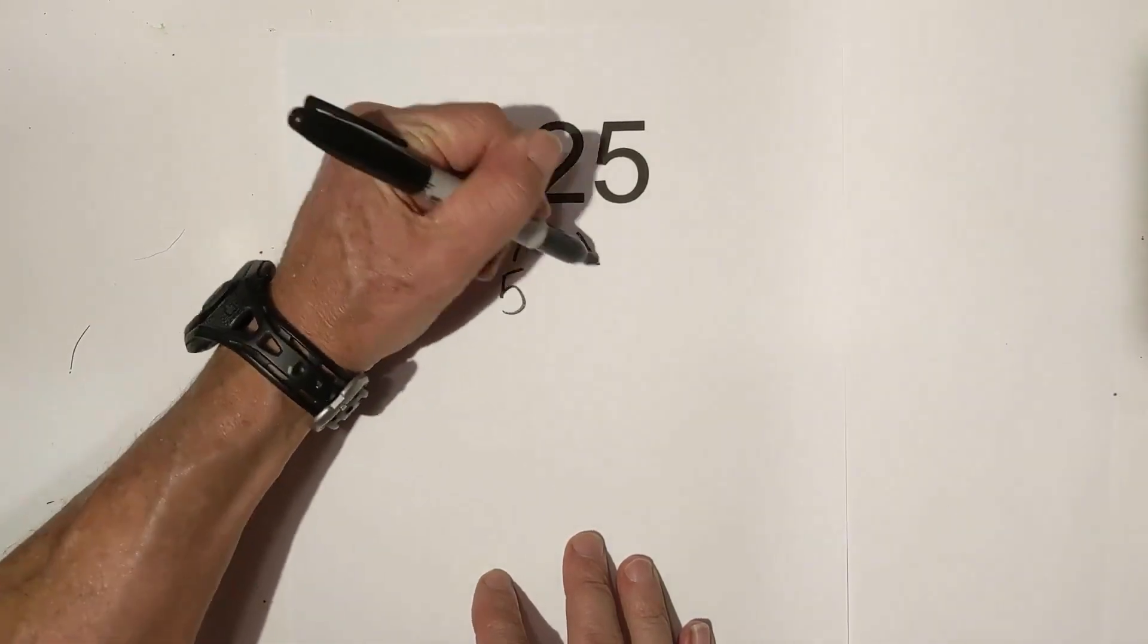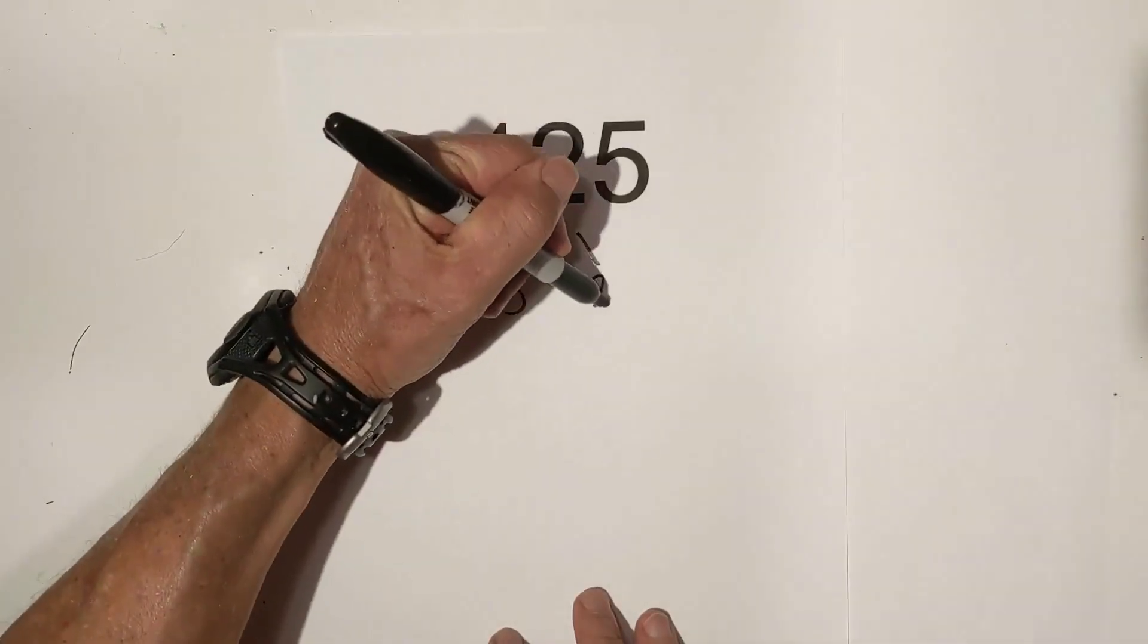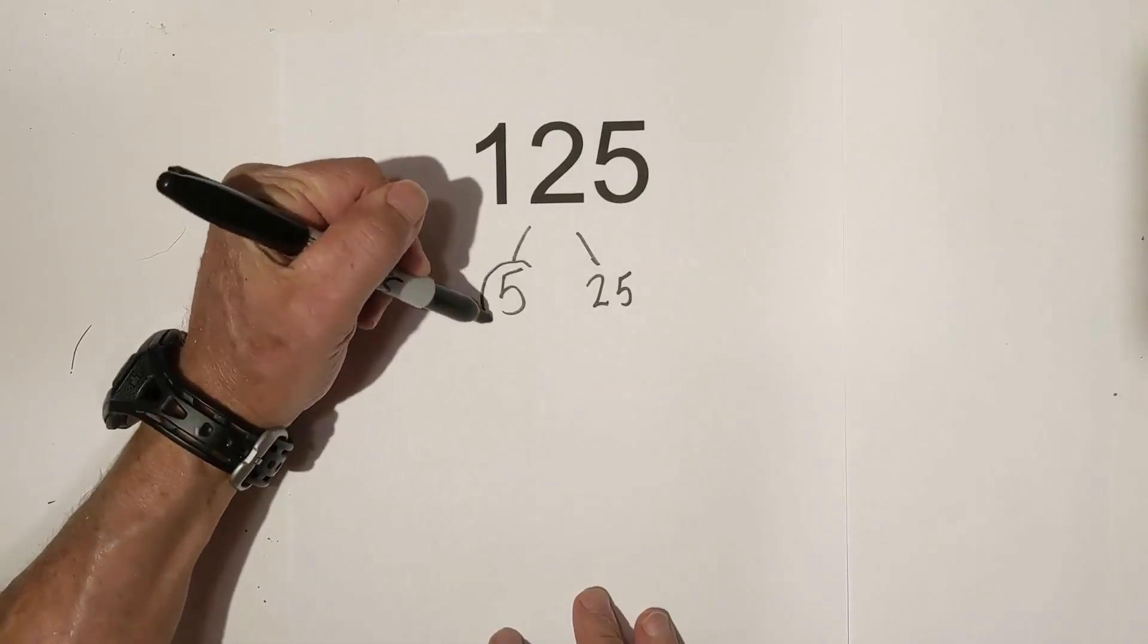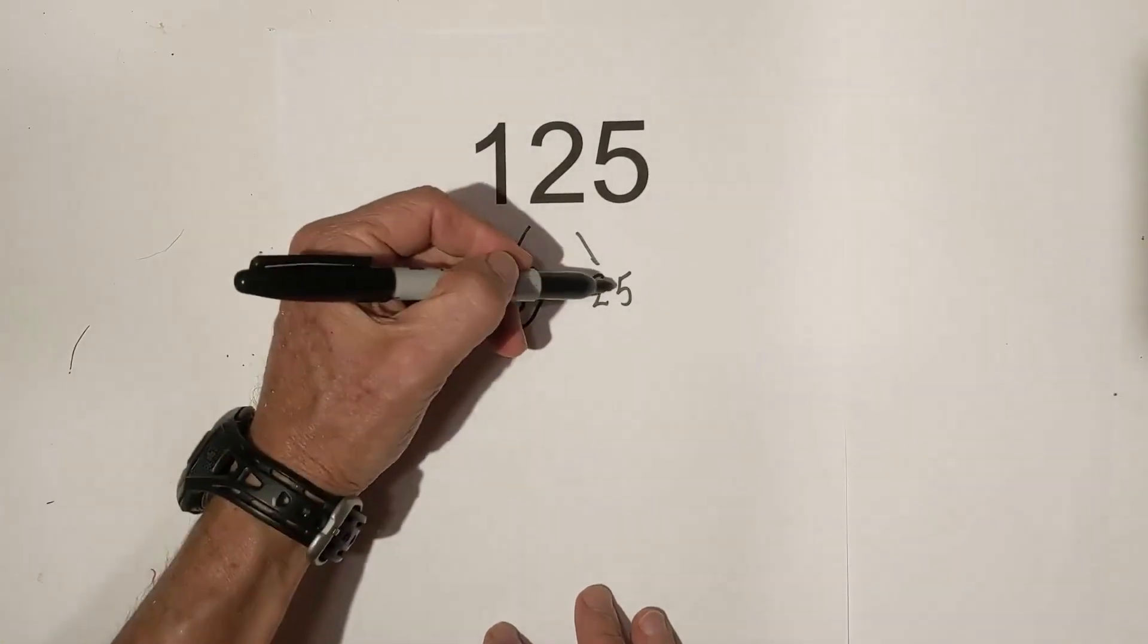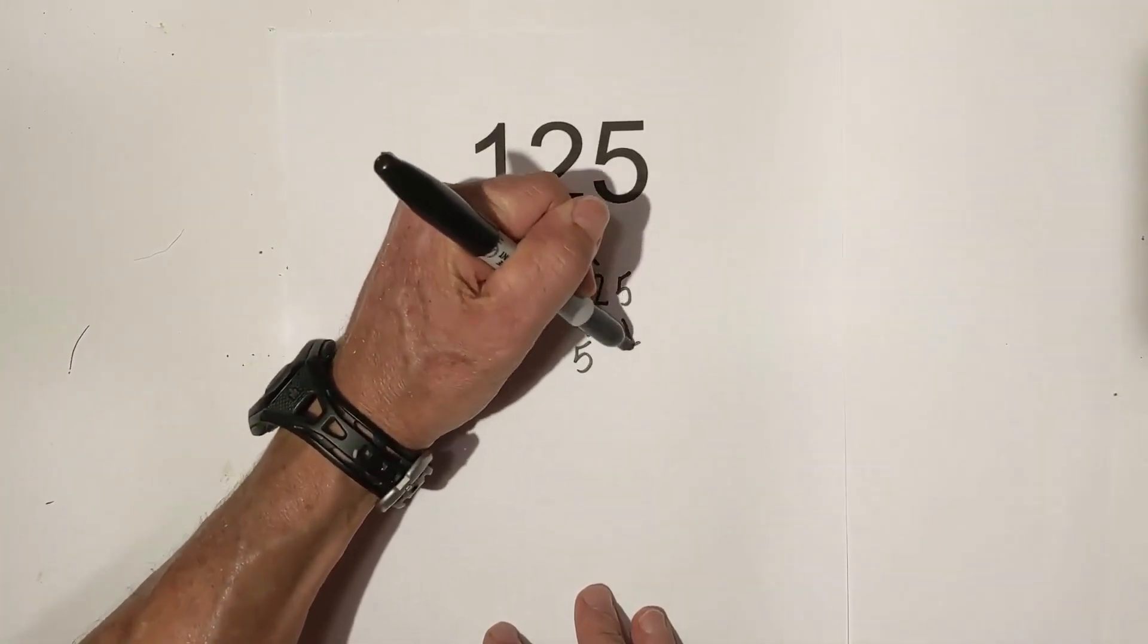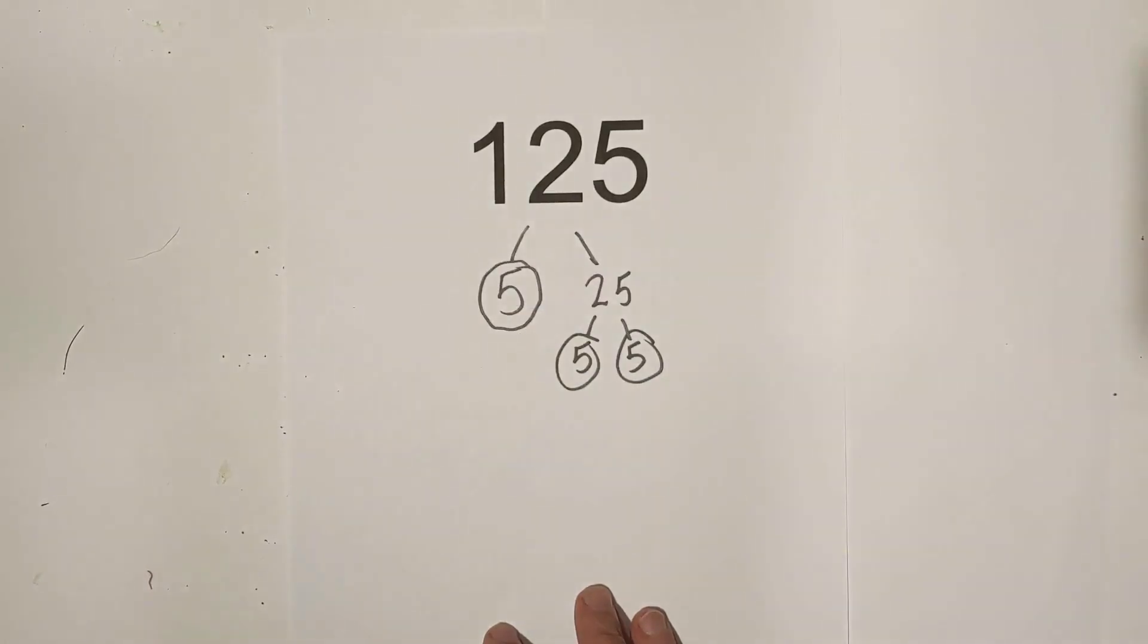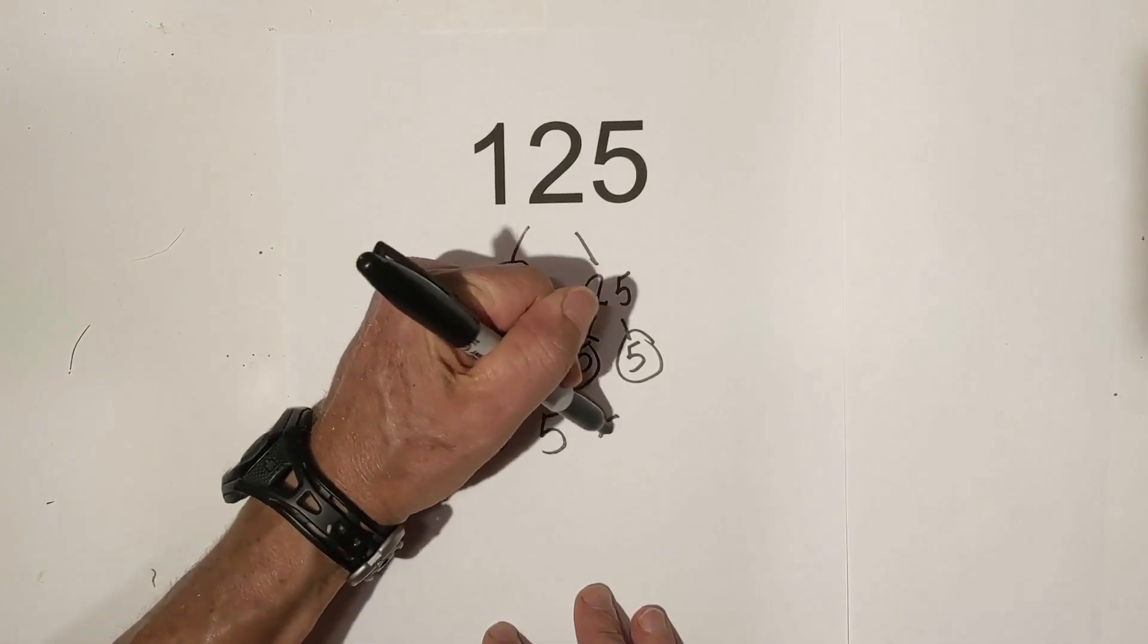Now we have 25, and I know the factors of 25 are five times five. And once again, we are down to prime numbers, so we are finished. Now let's write it: we have five times five times five, or you could rewrite it in exponential form as five cubed.